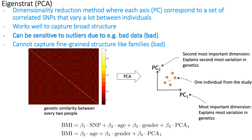Each PC axis in the principal components plot corresponds to a set of correlated SNPs, and variation in PC1 corresponds to variation in those correlated SNPs across individuals. The difference between PC1 and PC2 is that PC1 corresponds to a set of SNPs that collectively explain the most variation in genetics between individuals, while PC2 is a different set of SNPs explaining the second most variation.